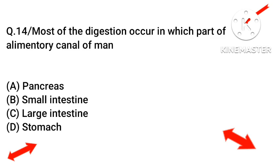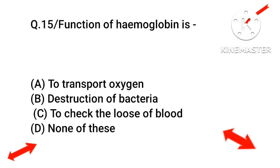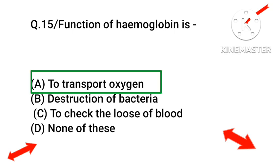Question number fourteen: most of the digestion occurs in which part of the alimentary canal? Answer: small intestine. Question number fifteen: what is the function of hemoglobin? The right answer will be to transport oxygen, option number A.